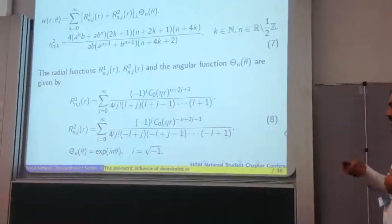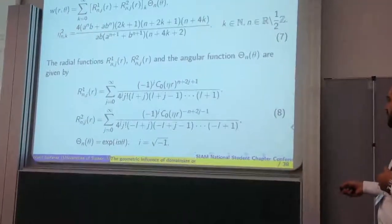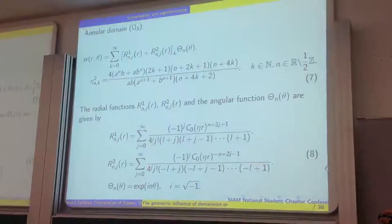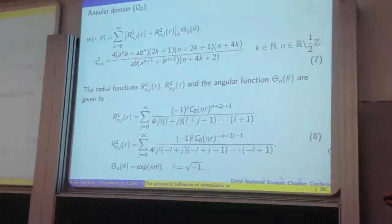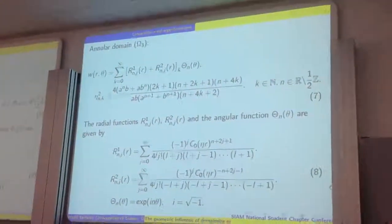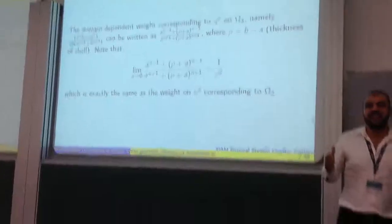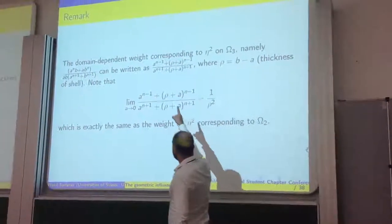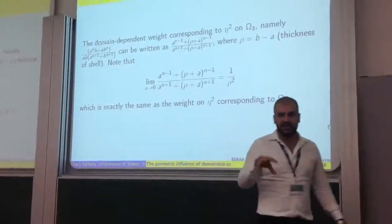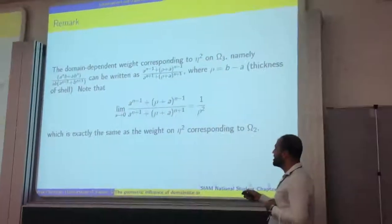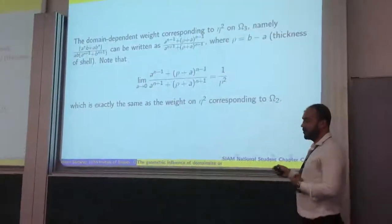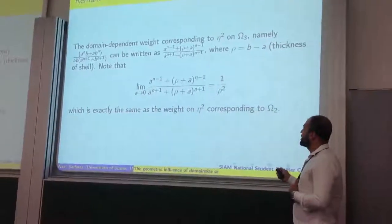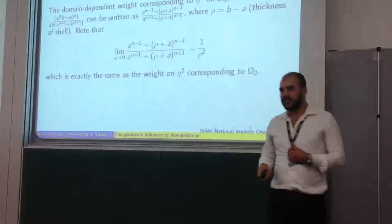The angular part — the theta part — is of course expressed by this expression. One remark is that if we look at this part of the eigenvalue and express the domain-dependent weighting in terms of the thickness of a ring, that would be B minus A. We will then be left with the rule in the expression and the inner radius, so the outer radius is embedded in the rule, and the expression takes this form. This is simple verification for the correctness of our results. If you take the limit as A tends to zero, we get exactly the same domain-dependent weighting as for the disk-shaped domain, that is 1 over rho squared.